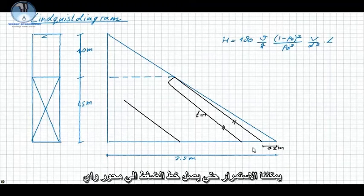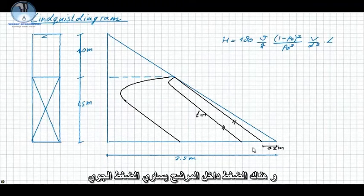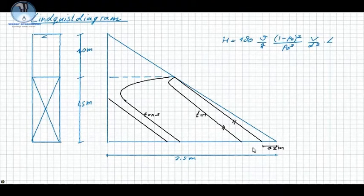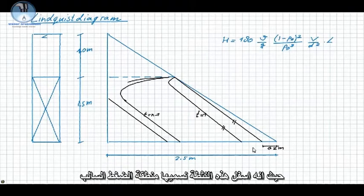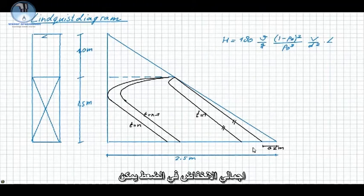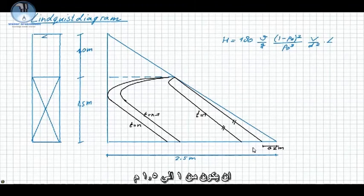Theoretically, we can continue until the pressure line touches the y-axis, where the pressure in the filter is equal to the atmospheric pressure. This point is critical because below this point — the zone of negative pressures — there is a risk of air coming out of solution, disturbing the filter bed. The total pressure drop can then be around 1 to 1.5 meter.